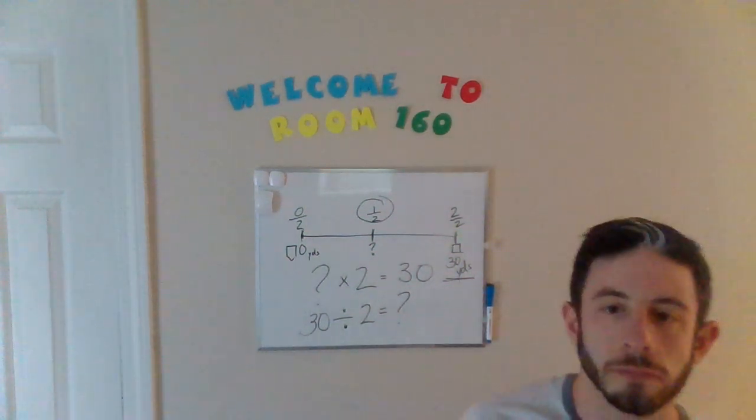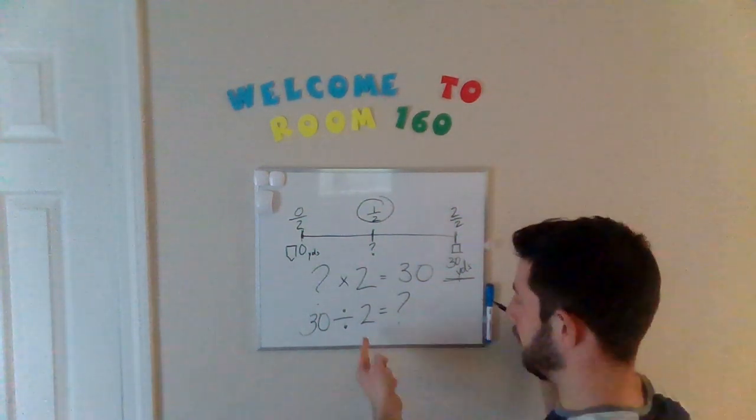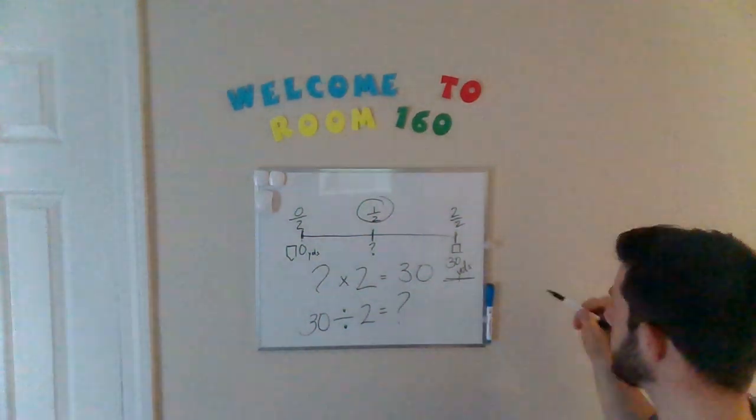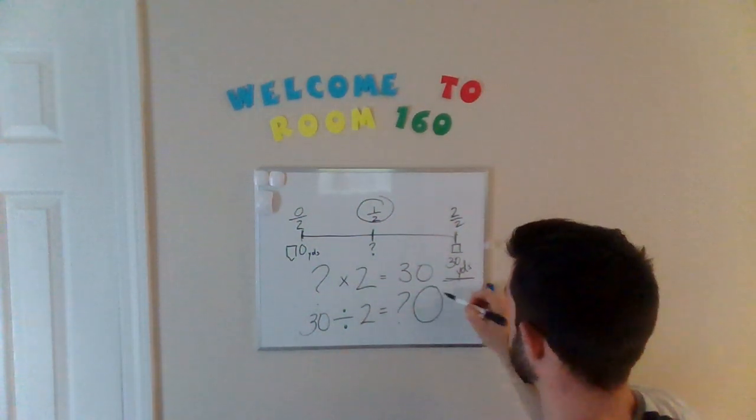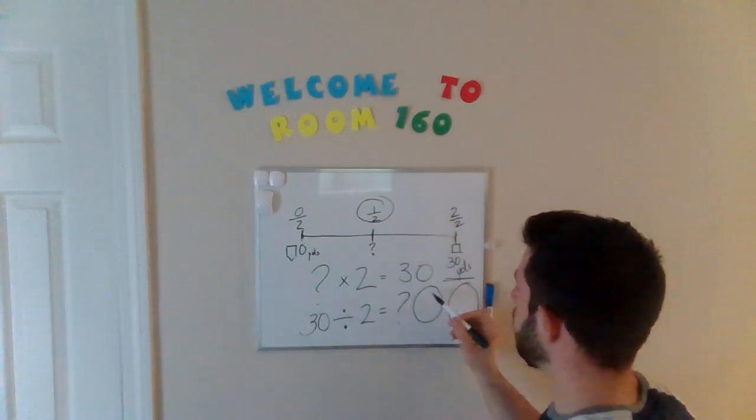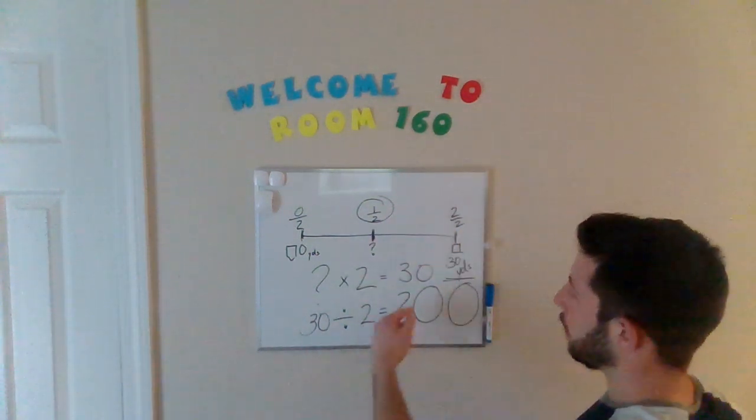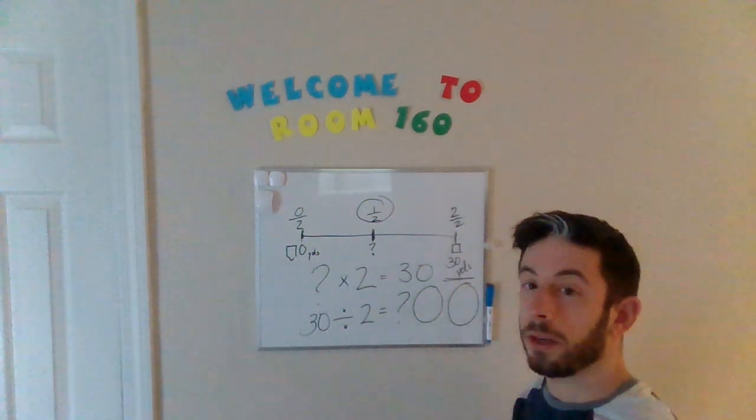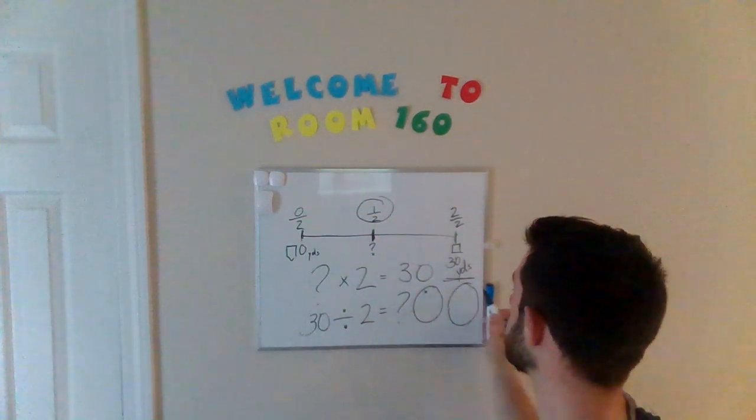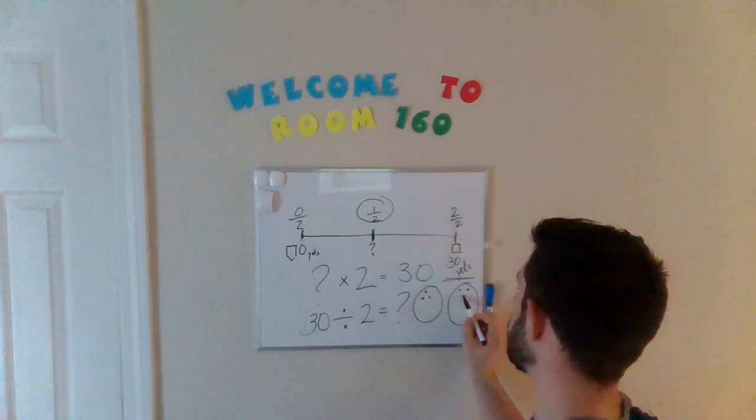When I divide, something I like to use is the fair share method. We could use two groups. We know that there's 30 total. Half of the way to home plate. We're going to figure out what 30 divided by 2 is in order to find that. So we're going to split 30 up into two equal groups. And we're going to stop when we get to 30.